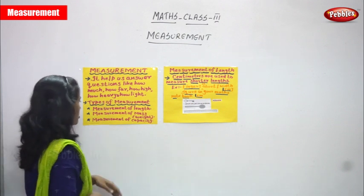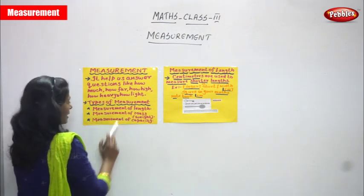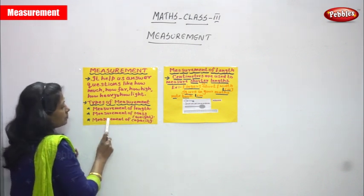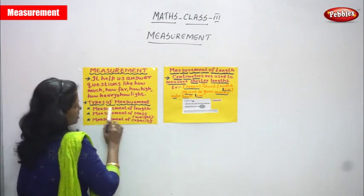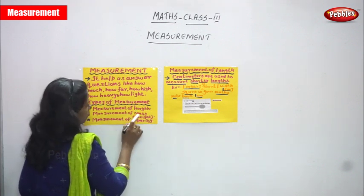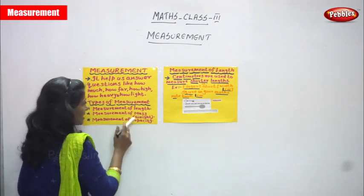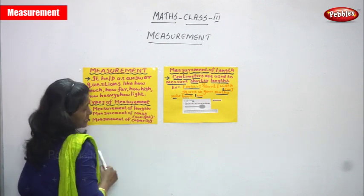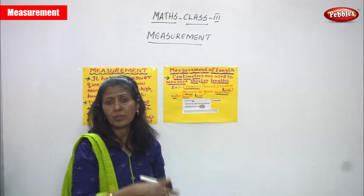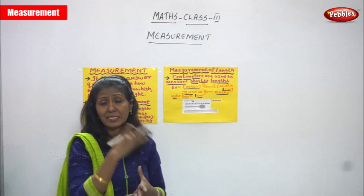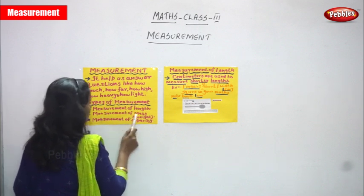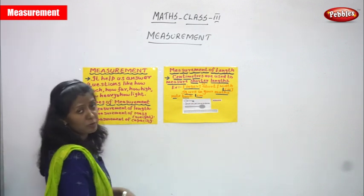Now we are going to see types of measurement. First is measurement of length — the length of an object. Second is measurement of mass, which means weight. Third is measurement of capacity — for example, if you take a pot and fill it with water, how much water it can hold is measurement of capacity. These are the types of measurement.